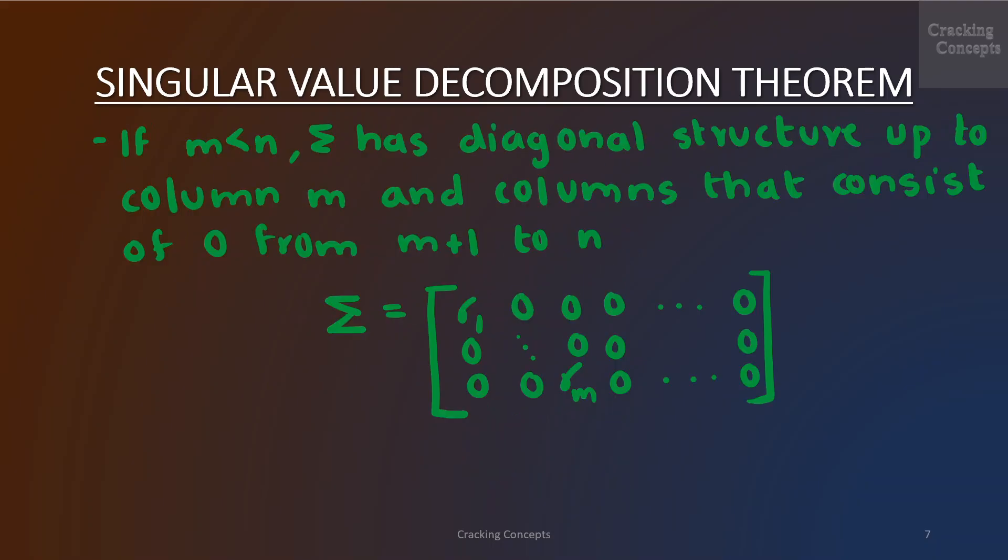In the case where m < n, the matrix Σ has a diagonal structure up to column m and columns that consist of zeros from m+1 to n. This will be the matrix Σ.